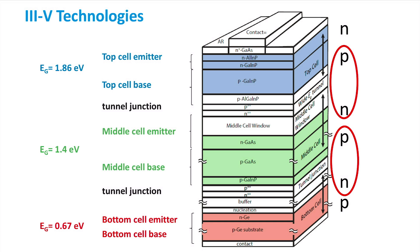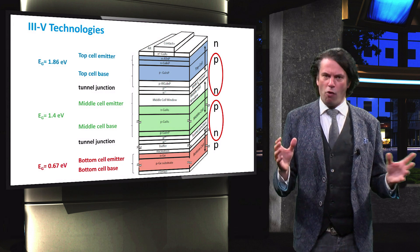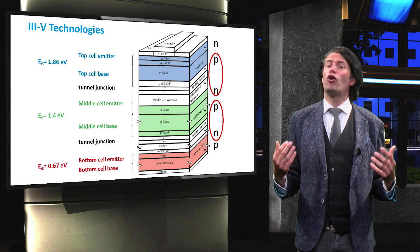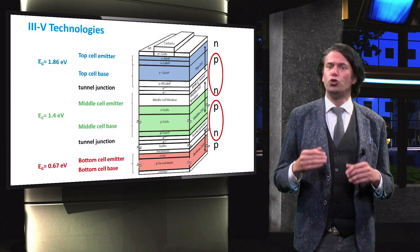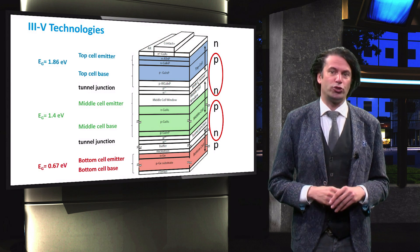In the second tunnel junction, the holes in the P layer of the gallium arsenide middle cell recombine with the electrons of the N layer of the germanium bottom cell. Only the electrons in the top cell N layer and the holes in the P layer of the bottom cell are collected. The increased output power of a multi-junction solar cell with respect to a single junction cell is therefore a combination of a higher voltage, which ideally is equal to the sum of the voltages of the three junctions, and a better spectral utilization.